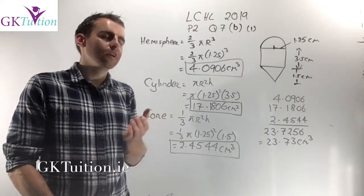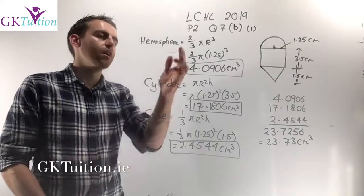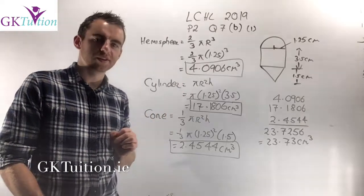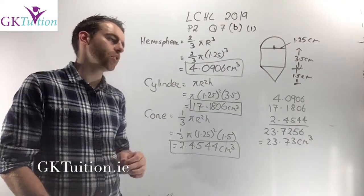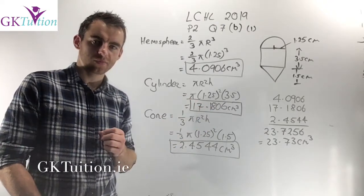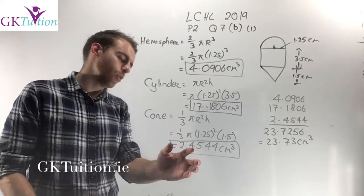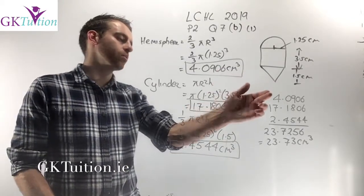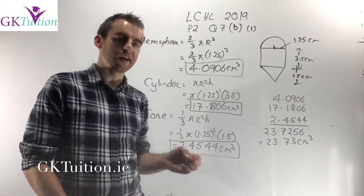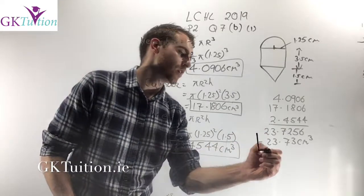The volume of a hemisphere is two thirds pi r cubed. With radius 1.25, this gives 4.0906. The volume of a cylinder is pi r squared h, giving 17.1806 cm³. The volume of a cone is one third pi r squared h, giving 2.4544 cm³. Adding all three: 4.0906 + 17.1806 + 2.4544 = 23.7256, which rounds to 23.73 centimetres cubed.